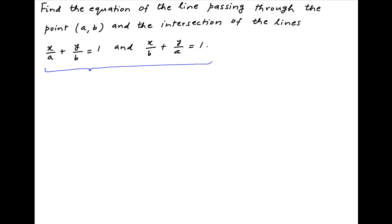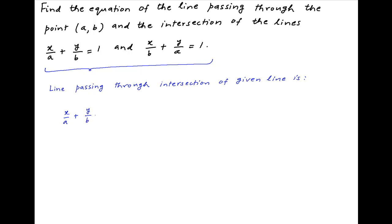The equation of the line passing through the point of intersection of the two given lines can be written as x upon a plus y upon b minus 1 plus lambda times x upon b plus y upon a minus 1 is equal to 0, where lambda is a parameter.